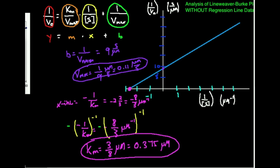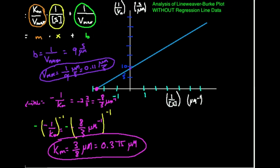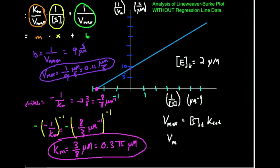If you happen to know the enzyme concentration, you can also figure out the kcat — the turnover number. Let's say the total enzyme concentration is two micromolar. Since Vmax equals the total enzyme concentration times kcat, I can rearrange: kcat equals Vmax divided by the total enzyme concentration.